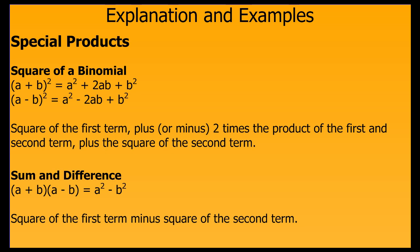For the quantity a minus b squared, it's the same except the middle term is negative: a squared minus 2ab plus b squared. So the first term squared minus 2 times the first term times the second term plus the second term squared.